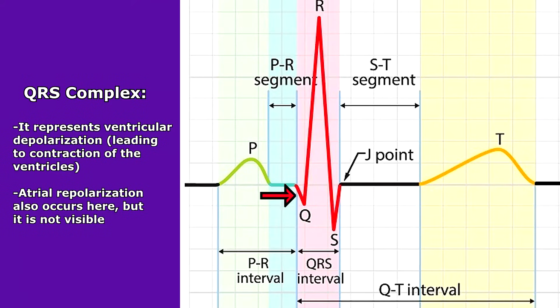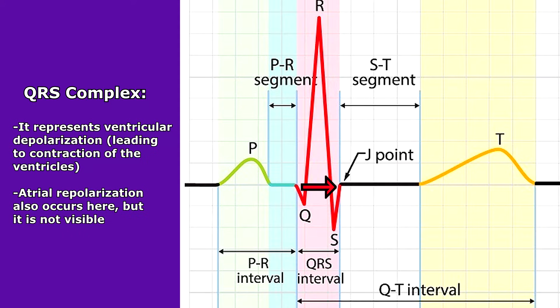The QRS interval, also known as the QRS complex, represents ventricular depolarization — leading to the contraction of the ventricles. Also found here, but not visible, is atrial repolarization where the atria are relaxing, but the ventricles are so large that whenever the atria relax it's overshadowed by the ventricles, so you're really only seeing ventricular depolarization.